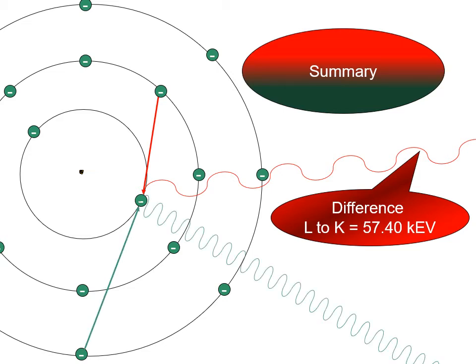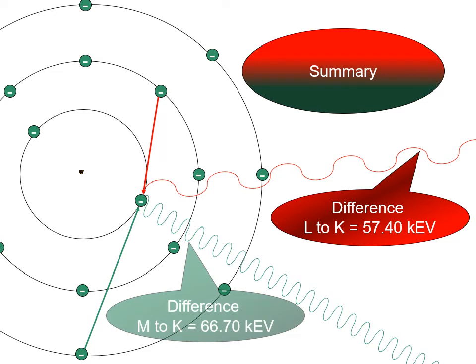Again, the K-shell electron is ejected by the high-speed electron. But in this case, an electron from a higher orbital replaces the missing electron. The energy difference between the K and the M-shell is 66.70 electron volts. So in this case, the higher-energy X-ray photon is produced.